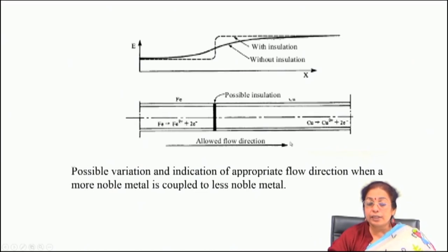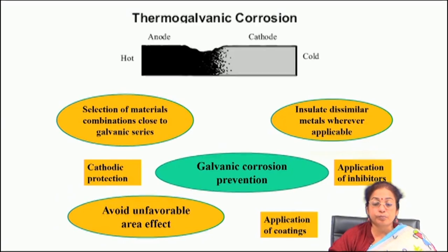For iron and copper combinations, if you insulate the parts you can minimize the tendency of attack on the anodic part of the couple. This is also the case for thermo-galvanic corrosion, where the hot part acts as anode compared to the cold part and the problem starts at the interface.